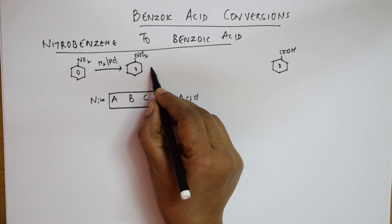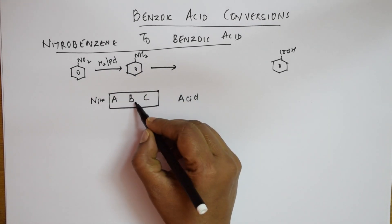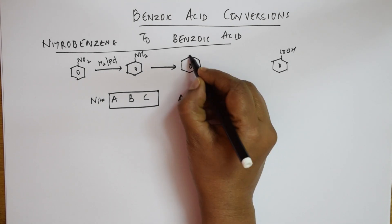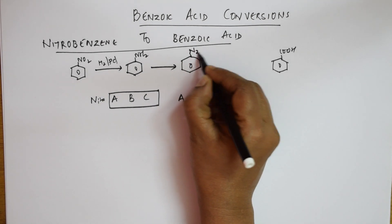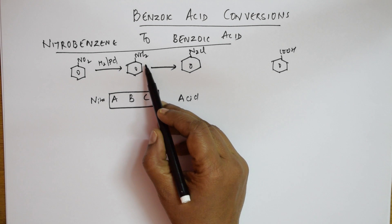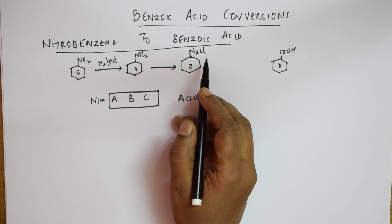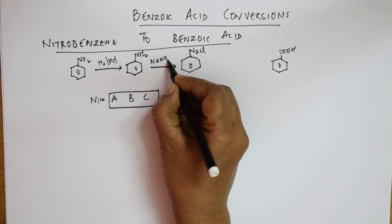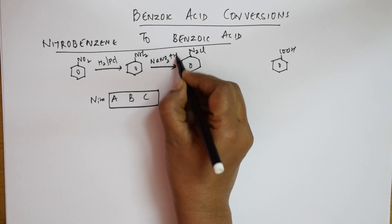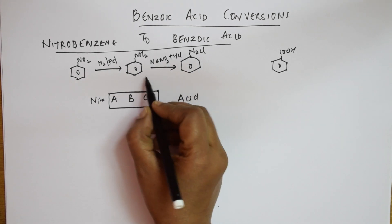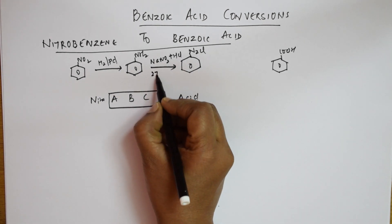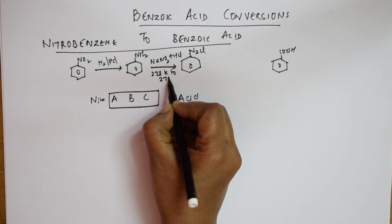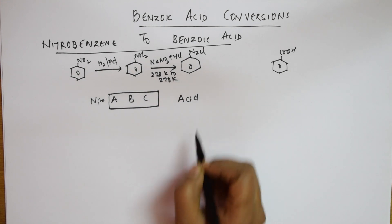From A, you are going to convert it to B — that is BDC, which is C6H5N2Cl. So how to convert aniline to BDC? We know this well. We use NaNO2 and HCl — converting aniline to BDC. And at what temperature? 273 Kelvin to 278 Kelvin. This step is also over.